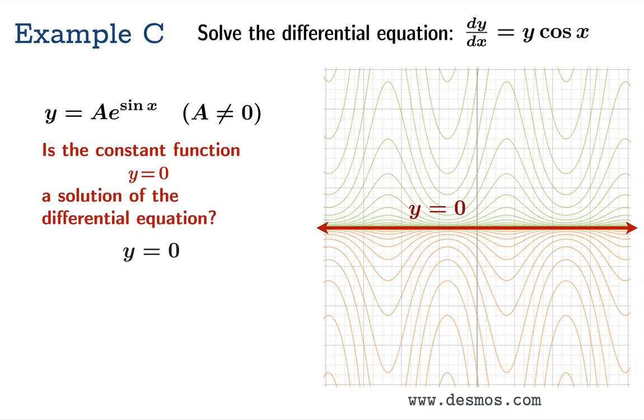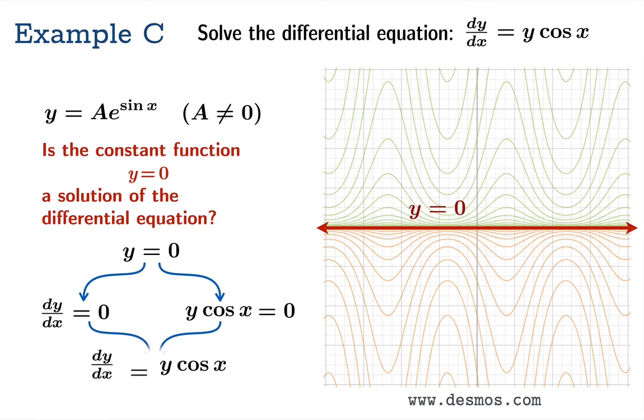We're going to look at y equals zero, the constant function. We should ask ourselves if that constant function is also a solution to the differential equation. How could we verify this? We'll take the constant function y equals zero and take its derivative - that's always equal to zero. And now consider the function y cosine x. If y is always zero then of course y cosine x is always zero. Lo and behold, the two sides of the differential equation both always being zero are certainly equal to each other. So the constant function y equals zero is in fact a solution that didn't show up in our separation of variables technique.